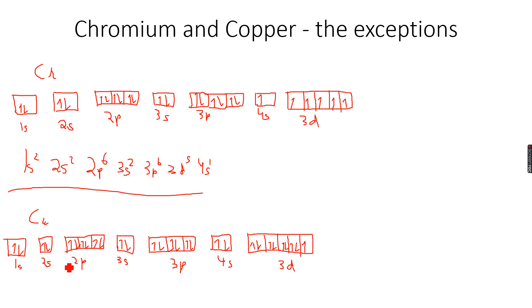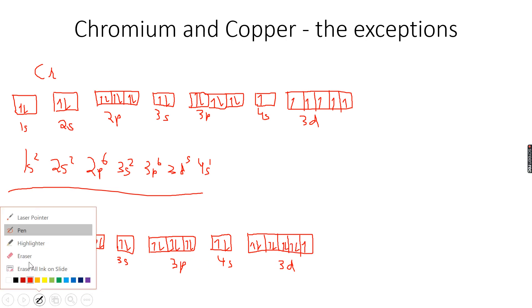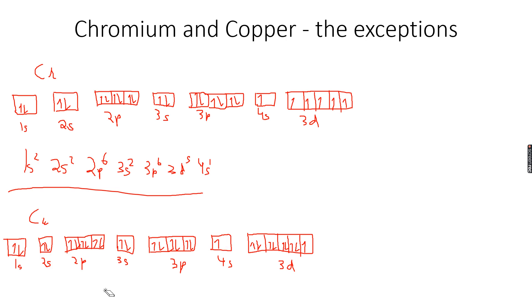So this is what we would think would be the actual electronic configuration for copper. However, if you look at the 3d subshell, this last orbital is never happy — all the other 3d orbitals have 2 electrons whereas it is alone. So what happens is it takes 1 electron from 4s and brings it over here, so now the 3d is completely full.